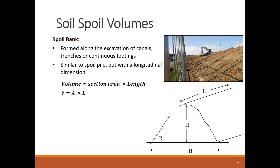The spoil bank has two other dimensions, the spoil height h and width b. As such, the volume equals the triangular cross-sectional area of the bank, half times b times h, multiplied by the bank length.